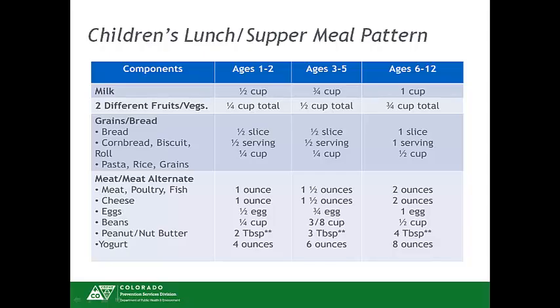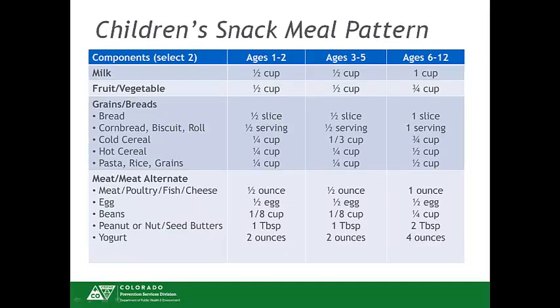For lunch and supper, fluid milk, two different fruits or vegetables, grain/bread-bread alternate, and a meat-meat alternate must be served in the minimum quantities. The five correct components must be served in order to meet the lunch and/or supper meal pattern. The snack meal pattern for children requires two different components. At snack time, fruit and vegetables are considered one component. For example, if apples and carrots were served at snack, this would not meet the meal pattern because both foods come from the same component. A second non-fruit or vegetable component, such as peanut butter, needs to be served to meet the snack meal pattern.